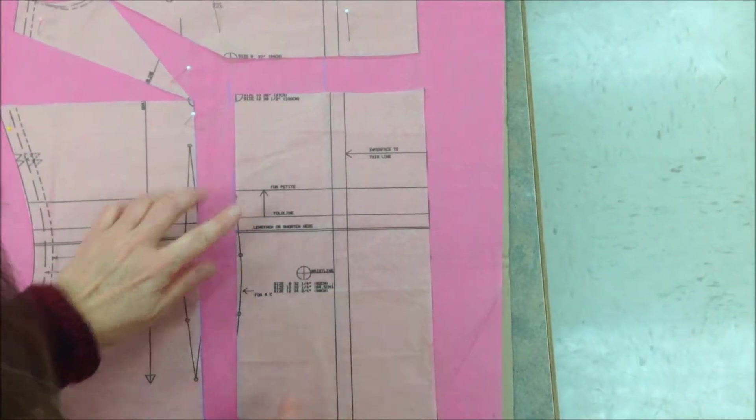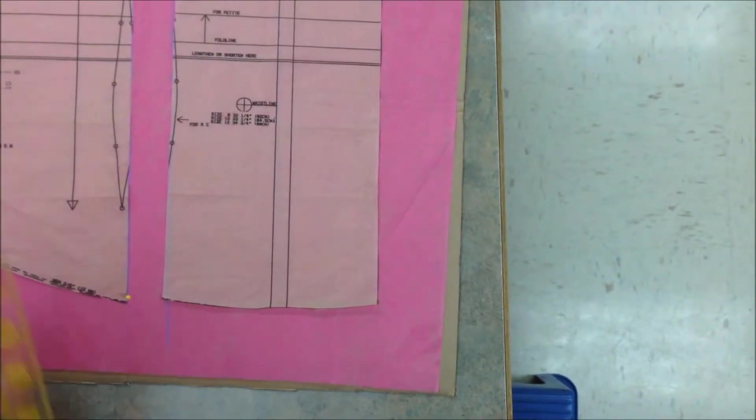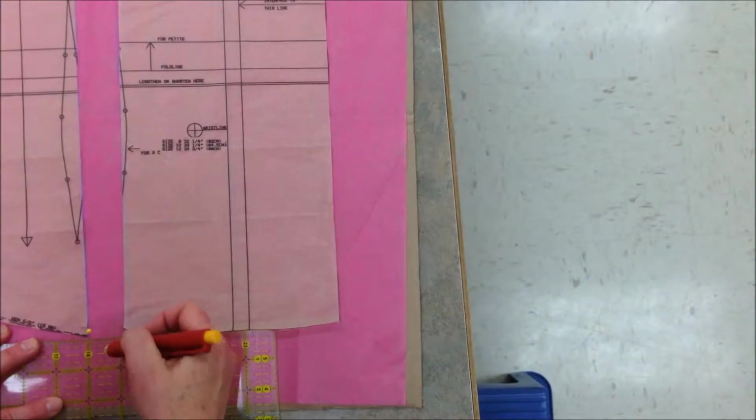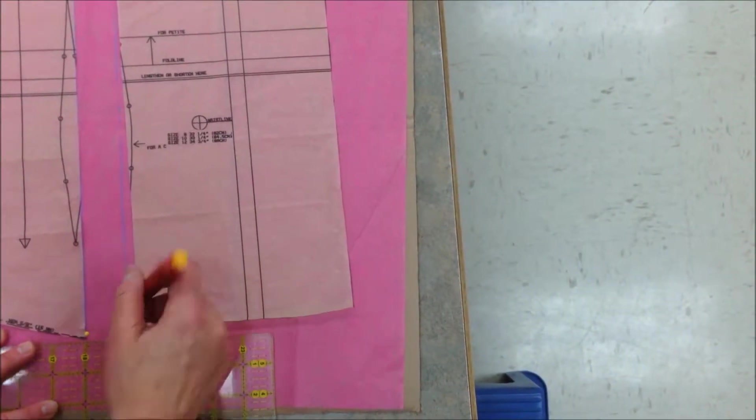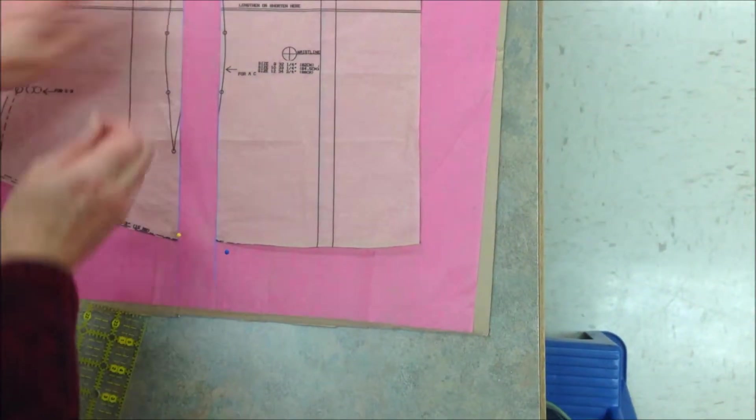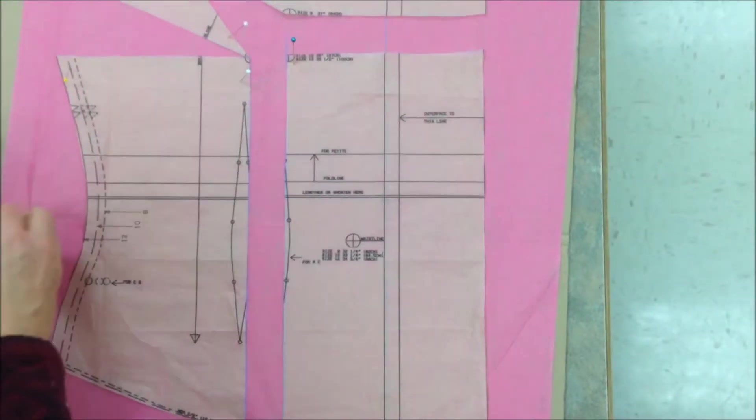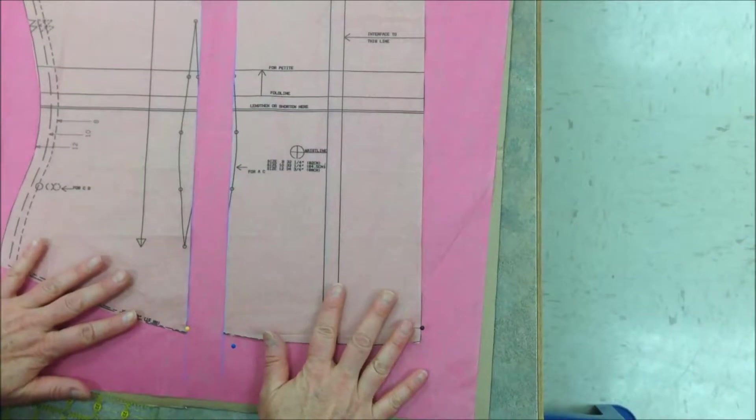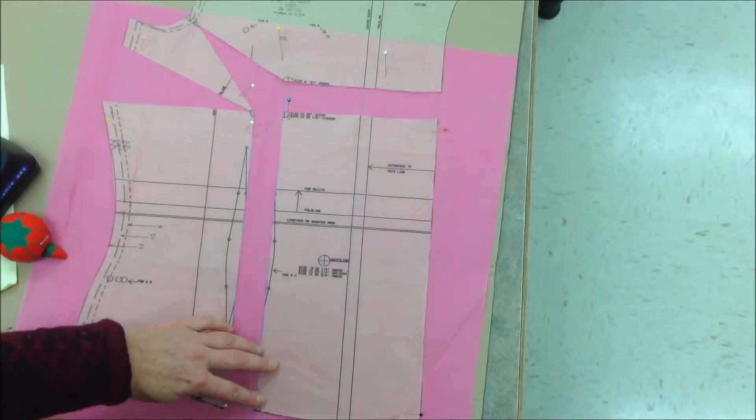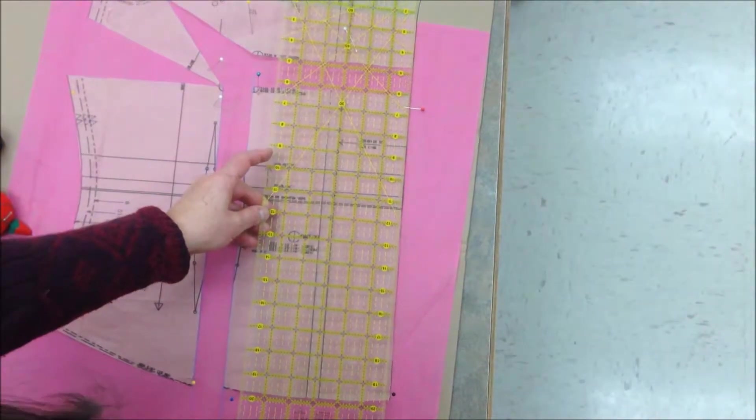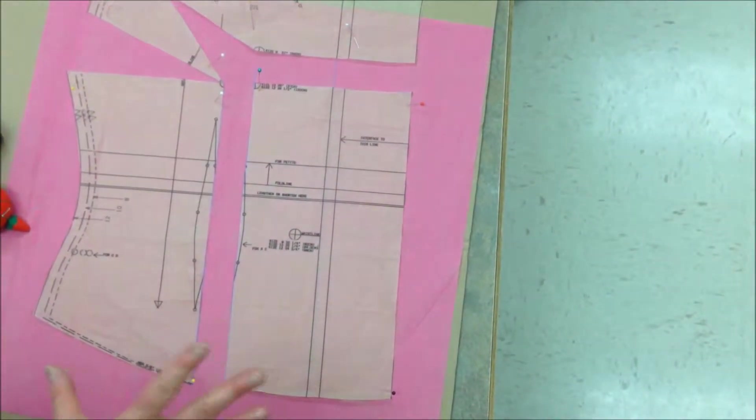Now, before we take this one, we have to come down here and just mark a perpendicular line so we know right where that bottom needs to line up. Line it up to our drawn line. Just check that. Make sure everything's straight. This should be the same as that. That looks good. And then we'll tape that.